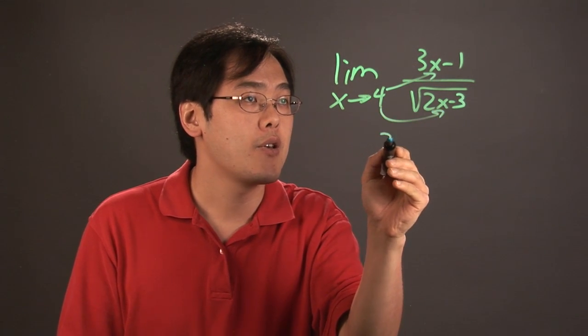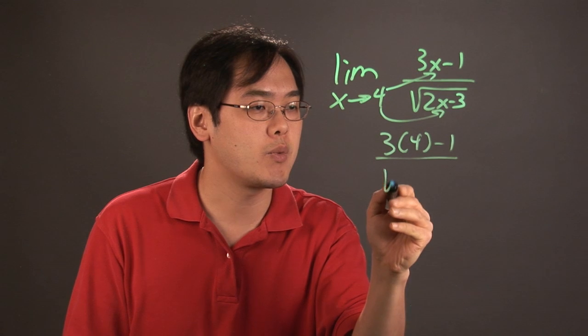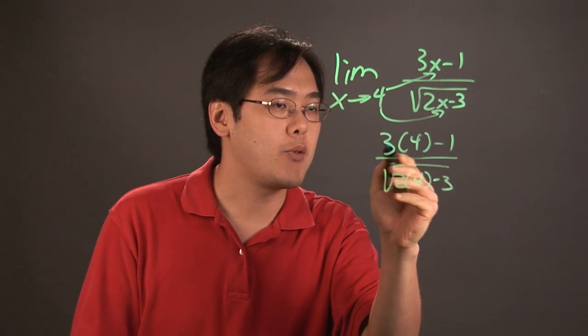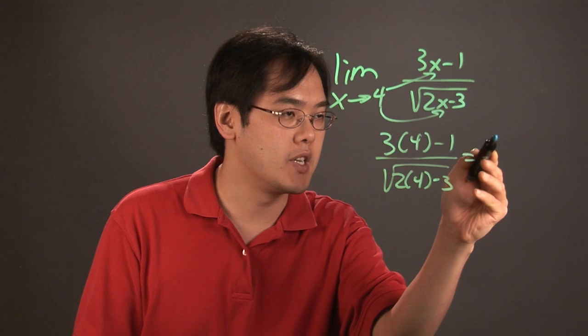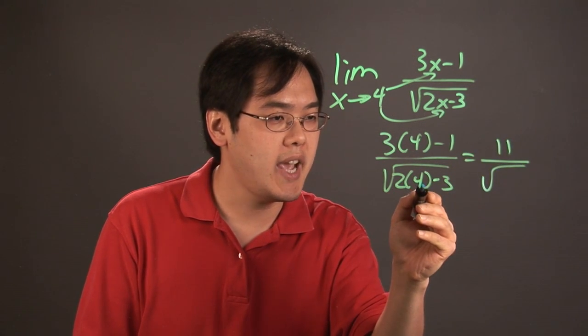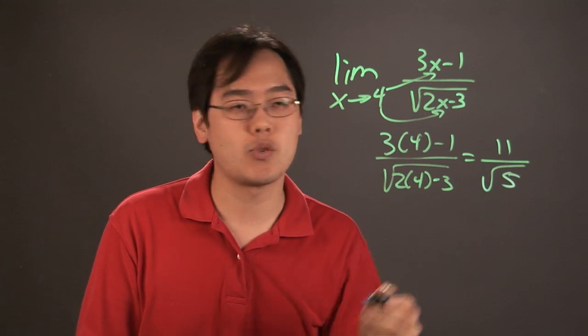So let's try to plug in 4 in place of x. So you're going to have 3 times 4 minus 1 over square root of 2 times 4 minus 3. Now, 3 times 4 is 12, minus 1 is going to be 11 over square root of 2 times 4 is 8 minus 3 is 5, so 11 square root of 5.